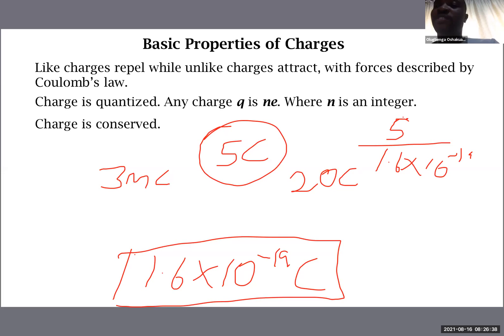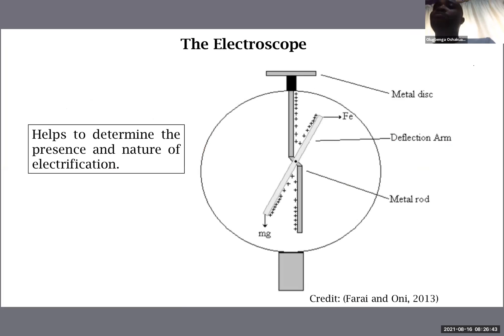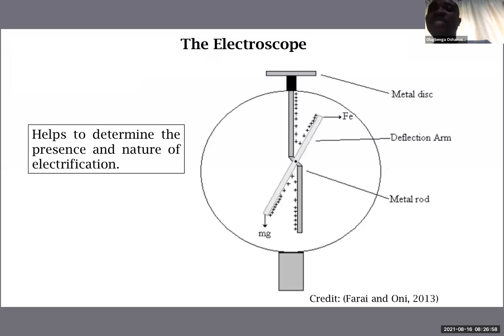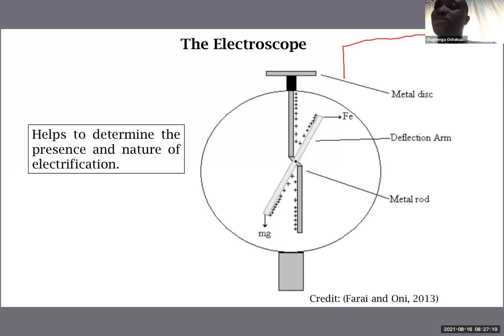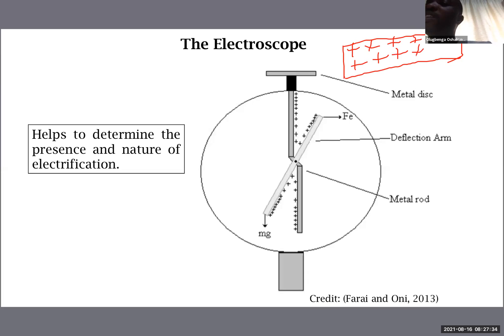Charge is also conserved — you cannot destroy charge and you cannot create it; it is conserved just like matter. To determine the nature of charges, one device that helps is the electroscope. This is a gold leaf electroscope, and it should be familiar from secondary school.